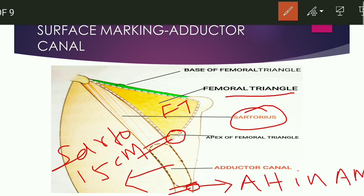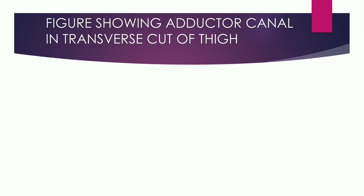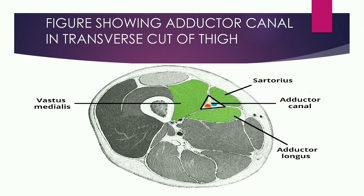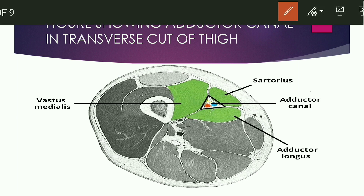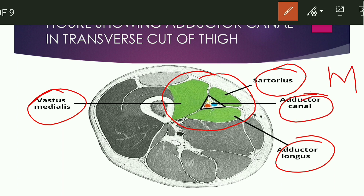Now moving ahead, this figure shows the Adductor Canal in a transverse cut of the thigh. This is a transverse section of the thigh, and for imagination you can see the muscles surrounding the Adductor Canal: Vastus Medialis, Sartorius, and Adductor Longus form the triangular shaped space or tunnel that is the Adductor Canal. This is the medial side, this is lateral, this is anterior, and this is posterior.